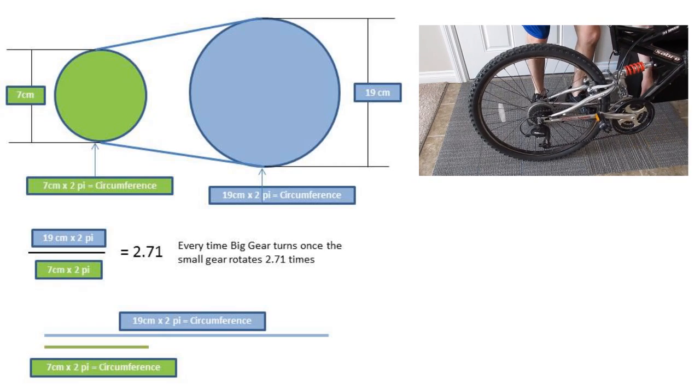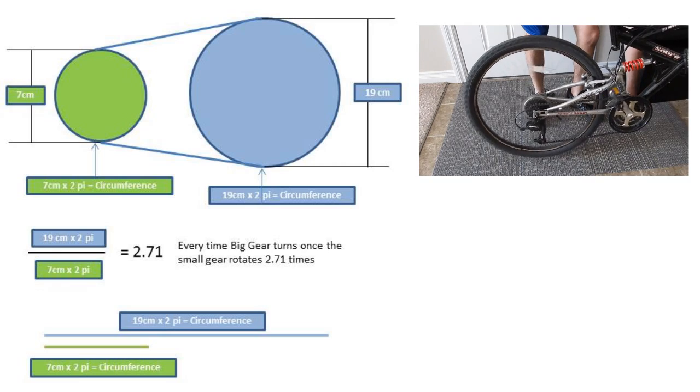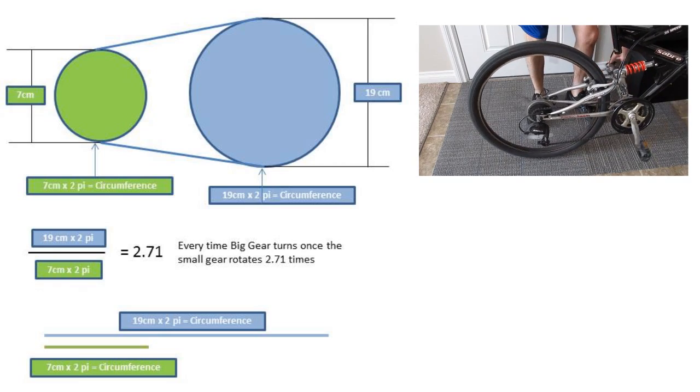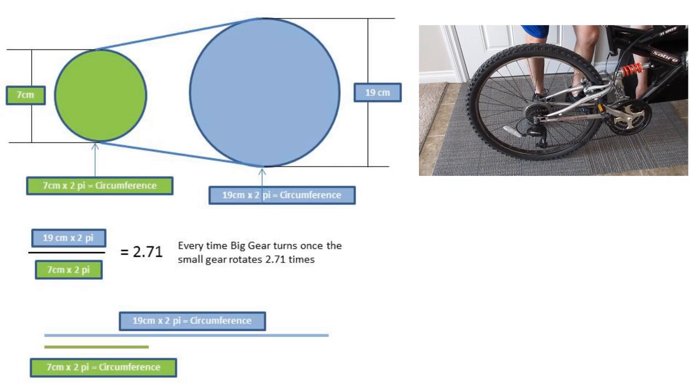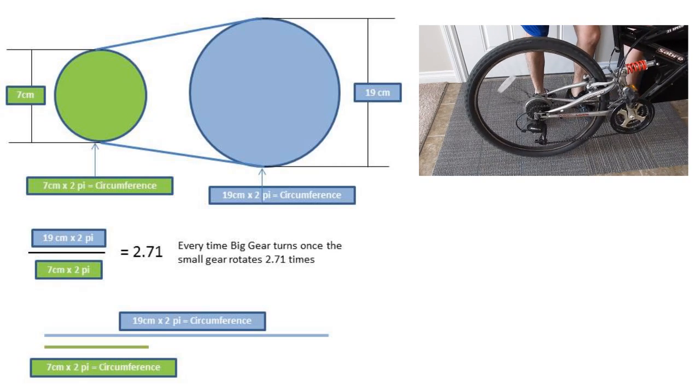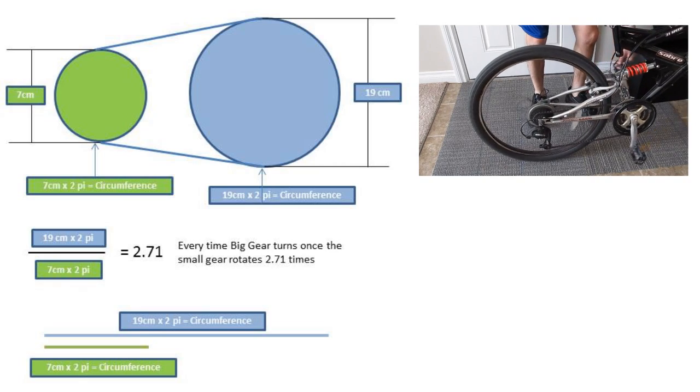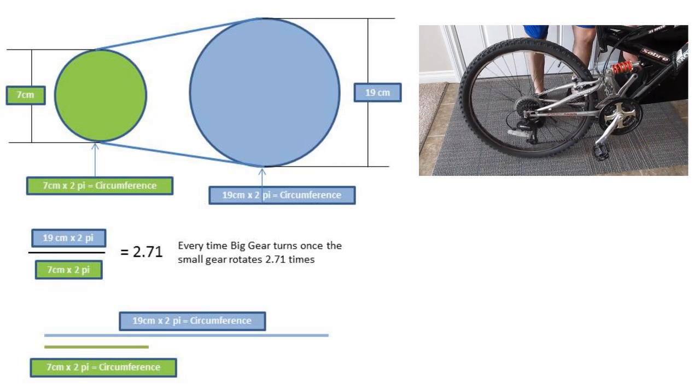As stated before, 2.71 of the 7 cm circumferences will fit into the 19 cm circumference, or in other words the 7 cm gear will rotate around 2.71 times for every one revolution of the 19 cm gear.